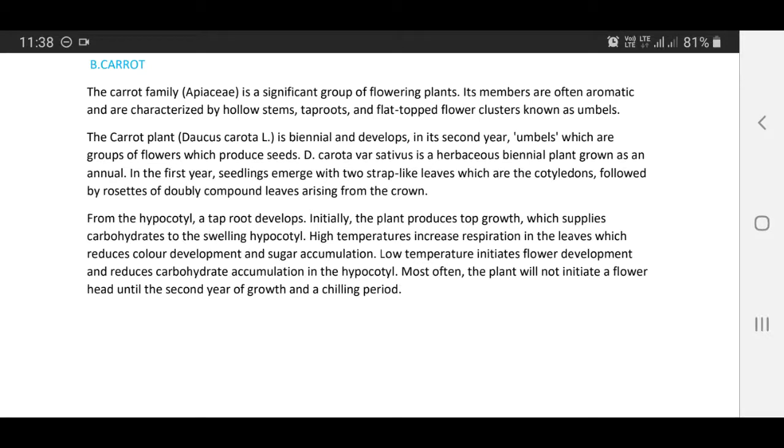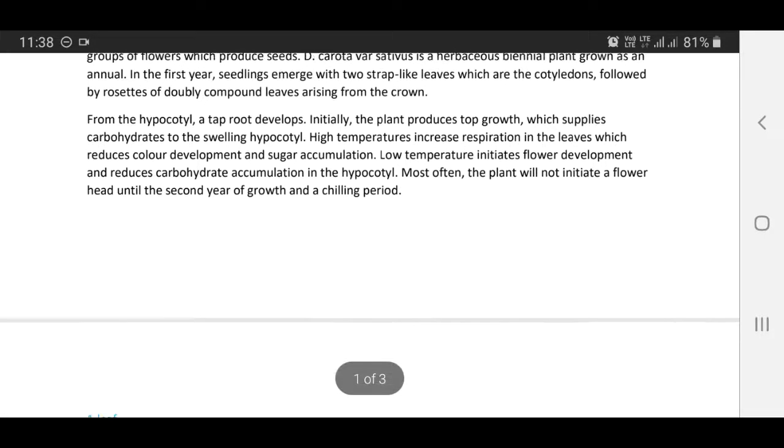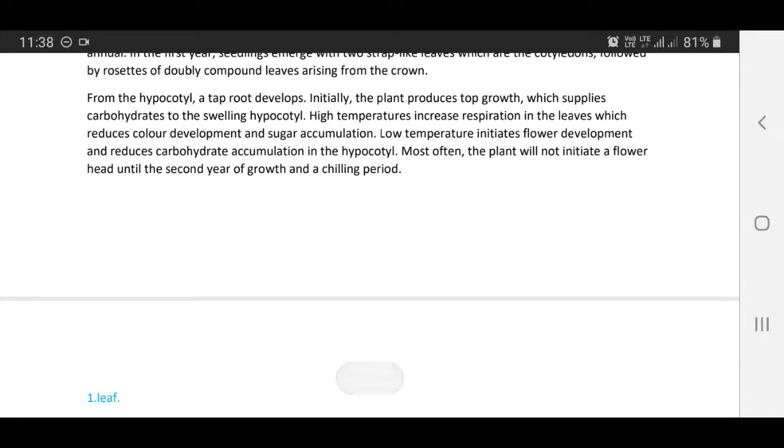Seedlings emerge with two strap-like leaves, which are the cotyledons, followed by rosettes of doubly compound leaves arising from the crown. From the hypocotyl, a tap root develops. Initially, the plant produces top growth, which supplies carbohydrates to the swelling hypocotyl.